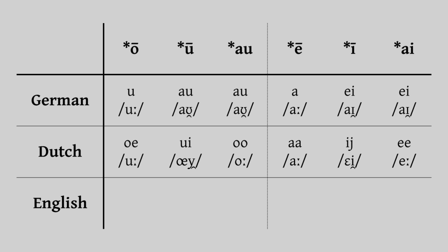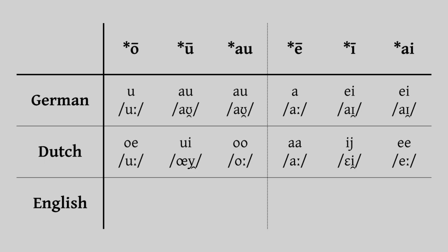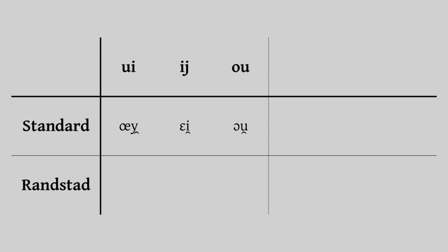But before we move on to English, there is one further part of the story of Dutch to look at. In a number of areas of the Netherlands around Holland and Utrecht, collectively known as the Randstad, which contain around 45% of the Dutch population, some of these vowels have been further lowered to form a picture a little more similar to their German counterparts. Our two standard Dutch diphthongs, plus the additional standard diphthong O, have been lowered to become I, I, and AW, while our two long mid-vowels plus the vowel U have broken to form diphthongs A, O, and O to replace them.